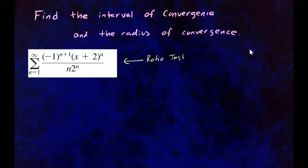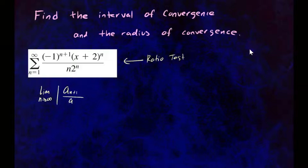The ratio test tells us to take the limit as n approaches infinity of a sub n plus 1 over a sub n. So let's figure out what our a sub n plus 1 term is — that's really plugging in n plus 1 everywhere there is an n in the formula.